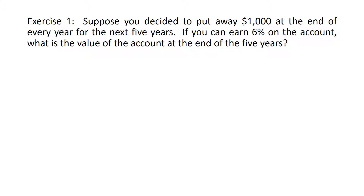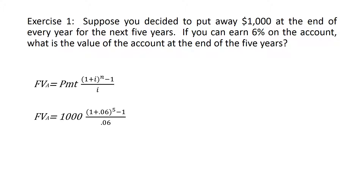Here we are going to solve for the future value of an ordinary annuity, because it says at the end of each year. Let's use the future value annuity equation, plug in the numbers — you might want to solve it all at once in your calculator or break it into two steps — and it gives us the answer, which is $5,637.09.